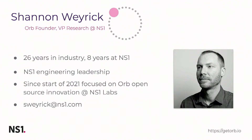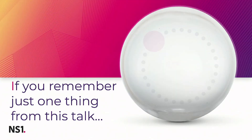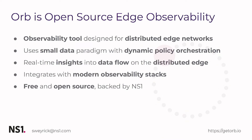The last couple of years I've been focused on the ORB project. If there are one or two things to take away: ORB is an open source edge observability product designed for distributed edge networks. It uses this small data paradigm combined with the concept of dynamic policy orchestration. The idea is to extract insights from data flowing at the edge and collect it so we can action on it and make it usable. There's a goal to integrate with modern observability stacks, and all of this is free and open source, backed by NS1.